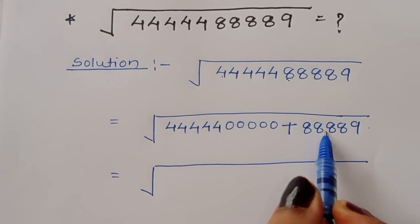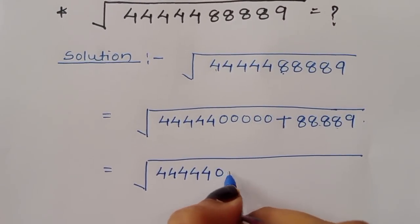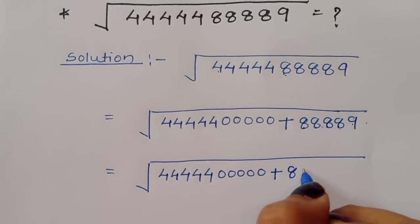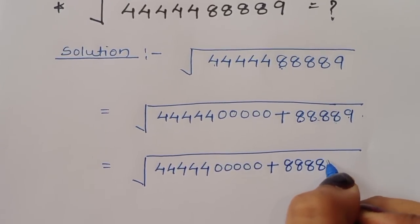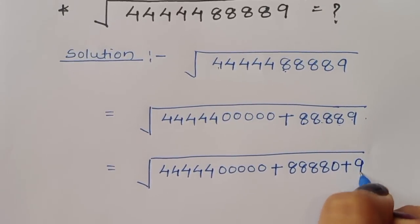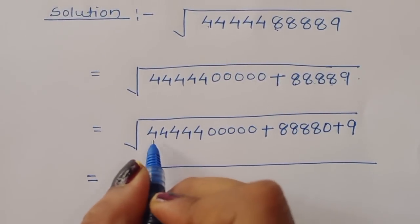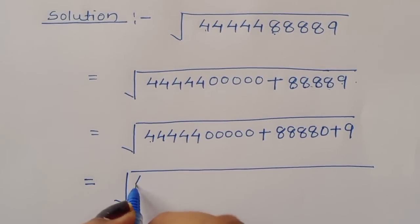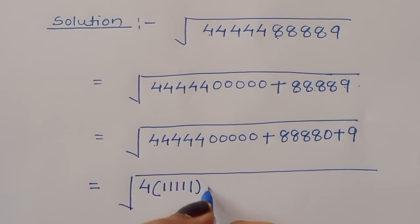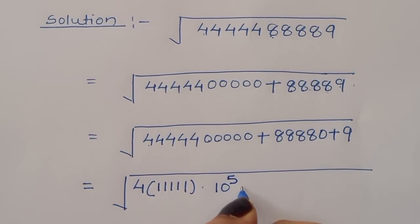Now we can again split this term. Same here: 12345 plus 12345, so one term becomes 0 because we are splitting this term, plus 9. Now we can take common factor 4, so when we take common 4, we get 12345 into 10 raise to 5 plus...